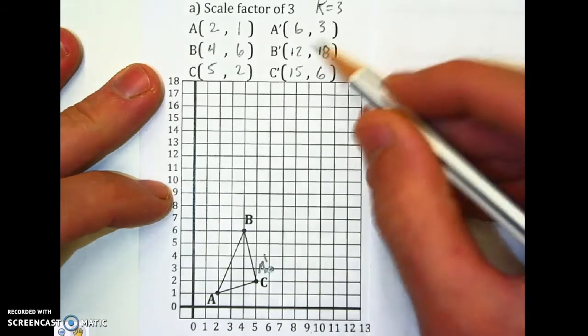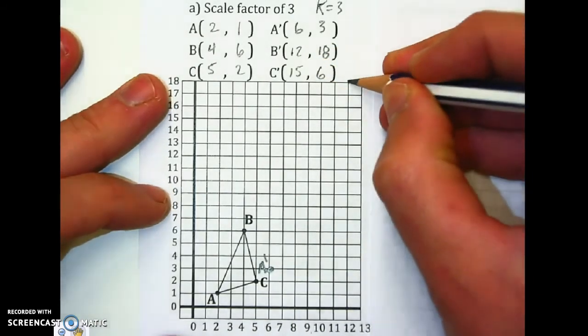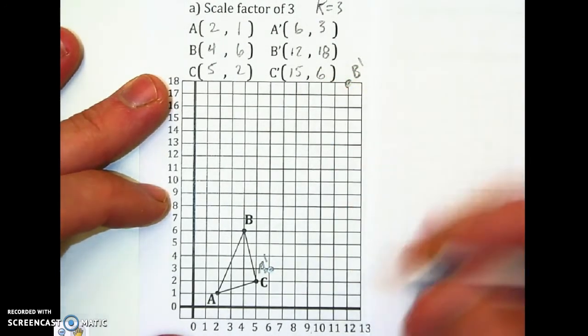There's A prime, 12, 18. That's a big one. B prime and 15, 6.